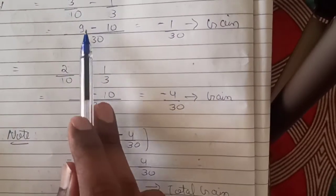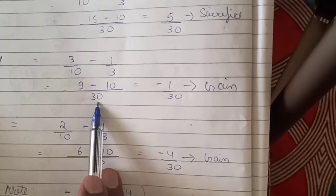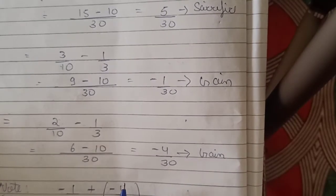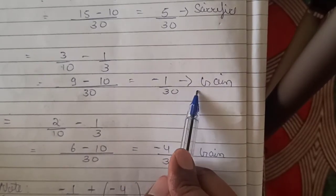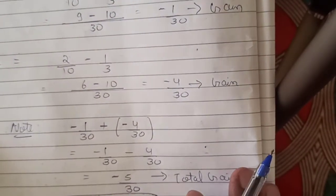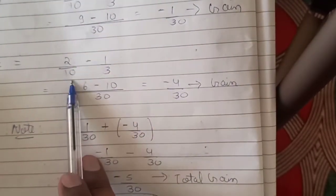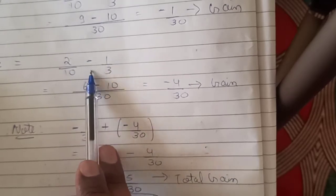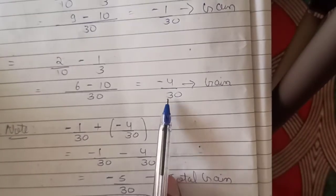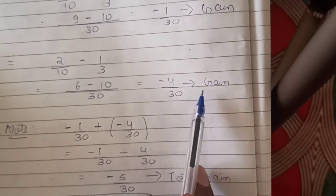For Y: old share was 3/10, new share is 1/3. Taking LCM: 9/30 − 10/30 = −1/30. The answer is negative, so it is a gain. For Z: old share was 2/10, new share is 1/3. Calculation: 6/30 − 10/30 = −4/30. The answer is negative, so this is also a gain.